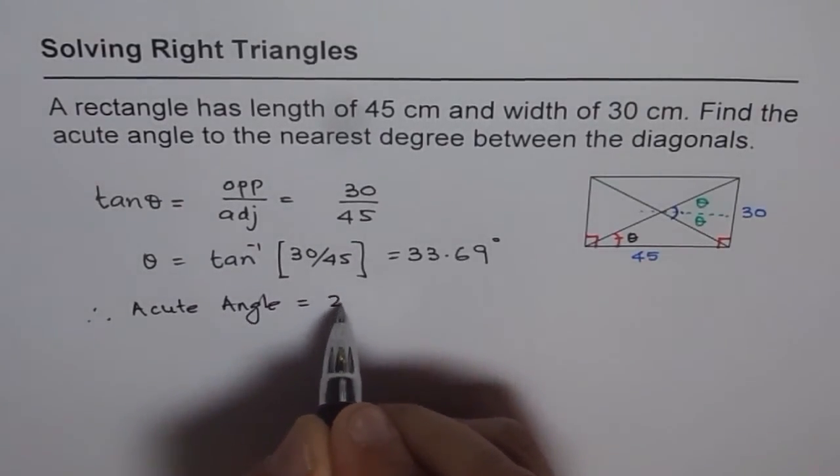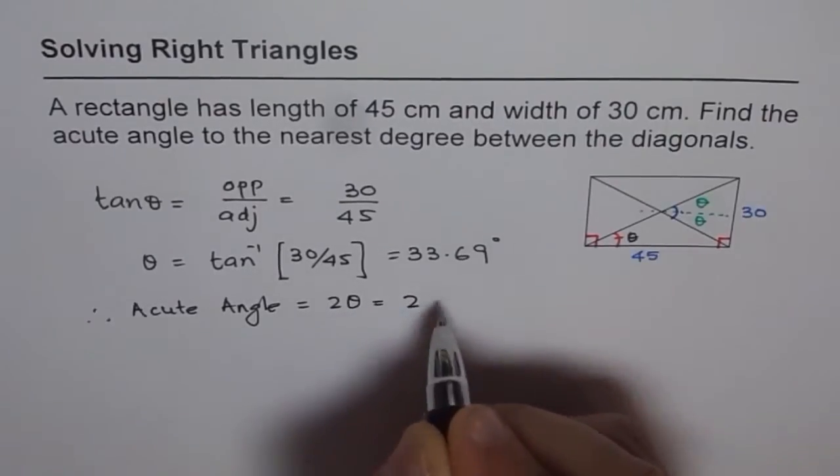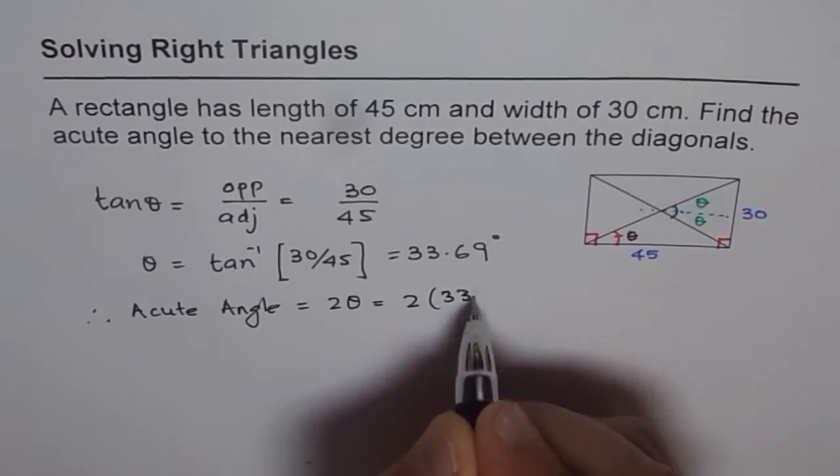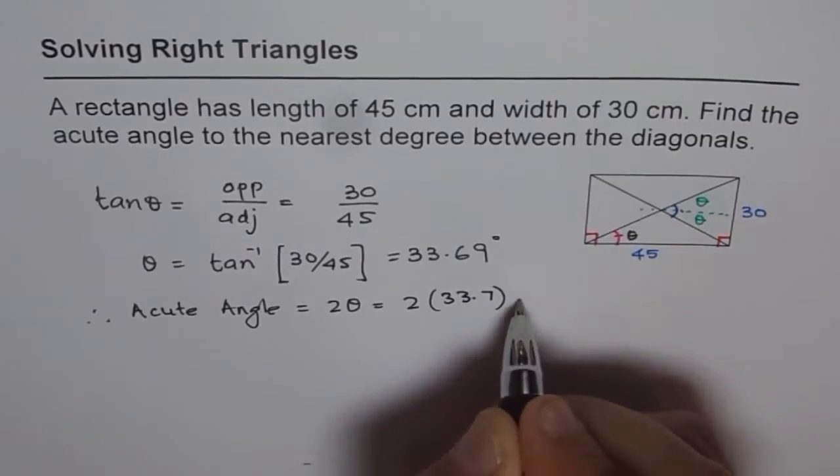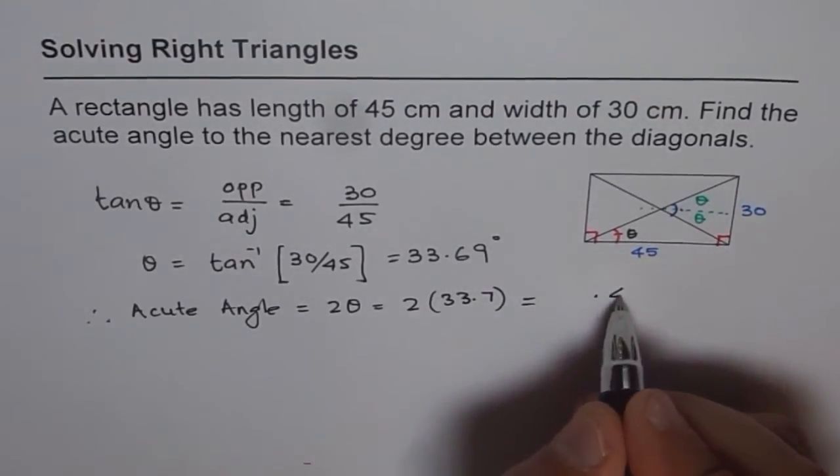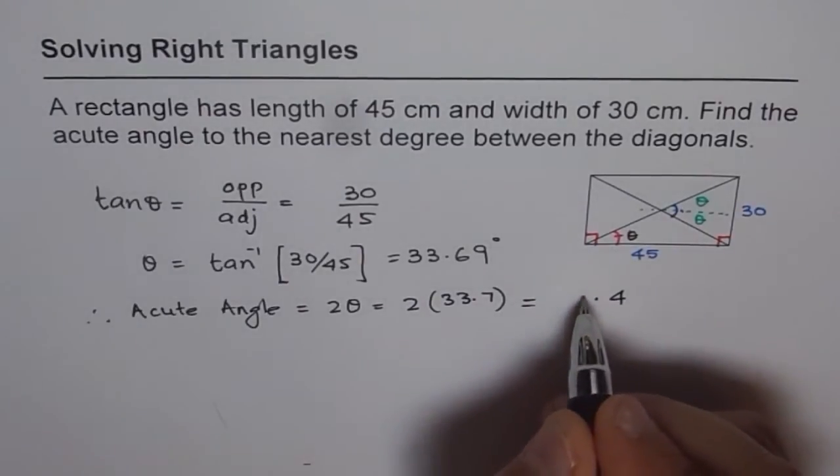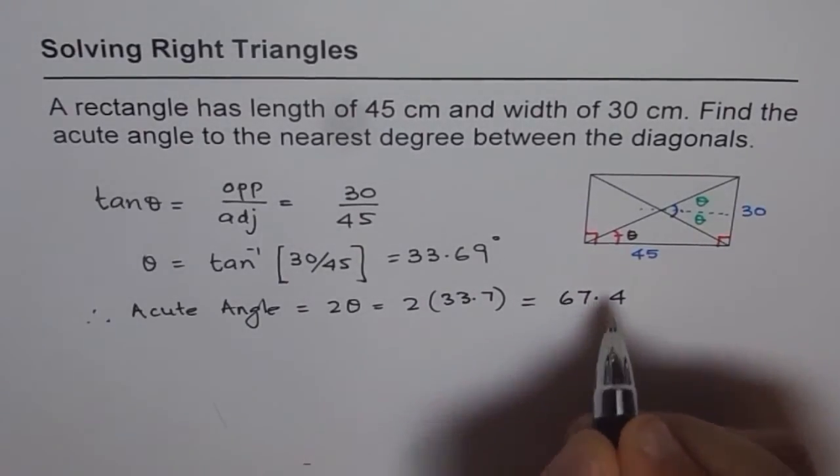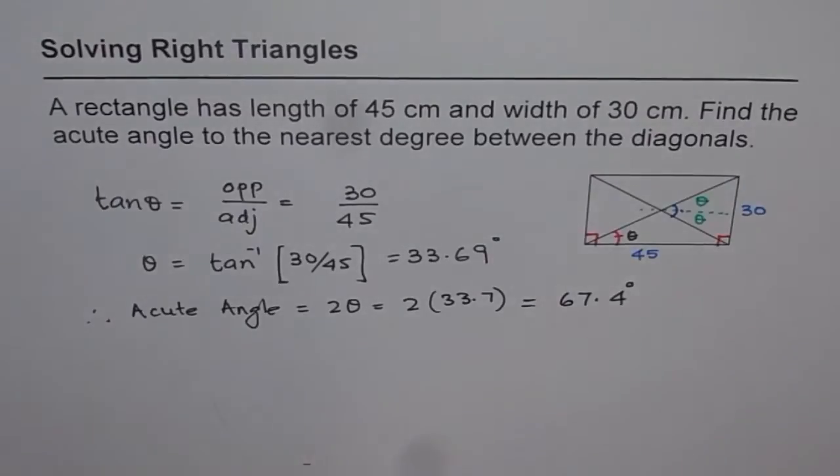Therefore we can see acute angle is equal to 2 times theta which is 2 times 33.69. Let's say 33.7. We can multiply this by 2 and get 0.4, 3 times 2 is 6 and 17. So 67.4 degrees. That is one way we can do it.